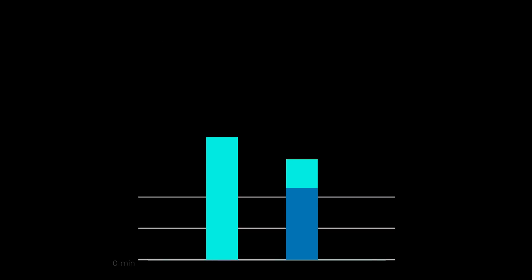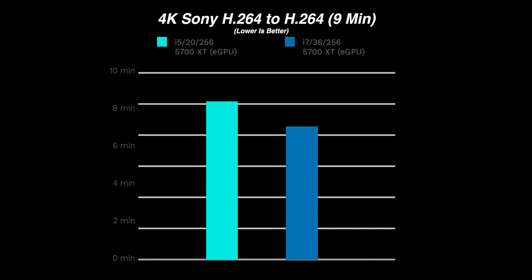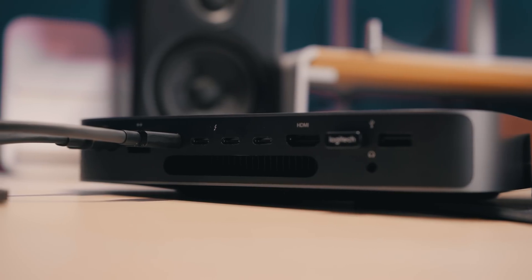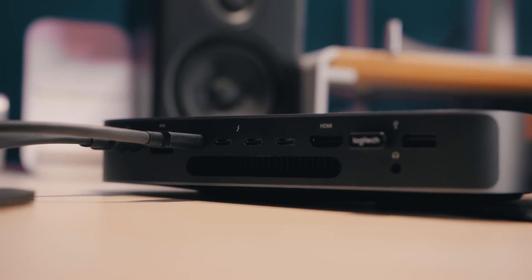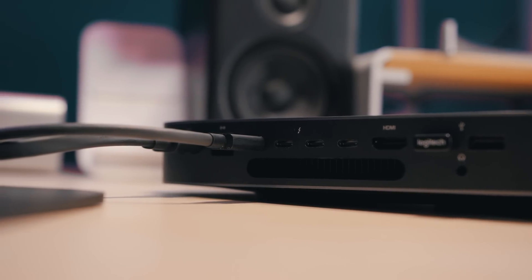I ran all the tests and here are the results. Overall this is pretty close — the i5 definitely held its own against the i7, or you could look at it as the i7 not being that much better than the i5 overall, at least for this use case. The i7 variant isn't necessarily an entire tier above the i5 in the same way that the i5 is pretty much a full tier above the i3 version of the Mac Mini. The most taxing exports are where you're going to see the i7 truly outshine the i5.